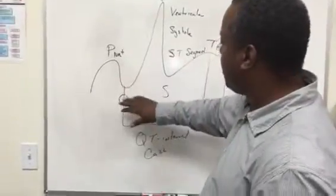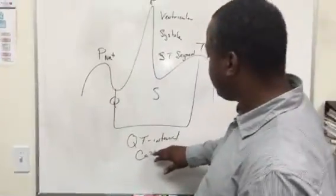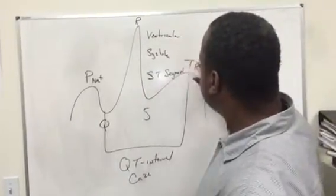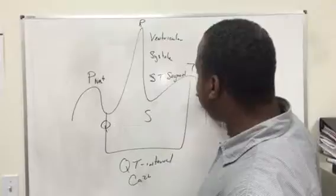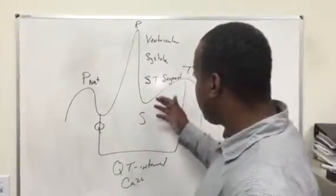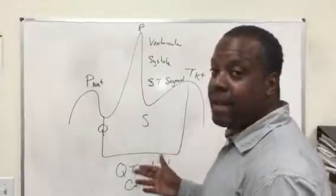So this is it. P wave, sodium. The QT interval lets you know calcium. The T wave lets you know is potassium. So even on the EKG tracing, we can tell electrolyte imbalances.